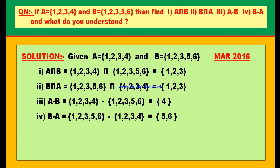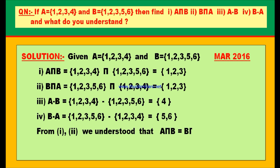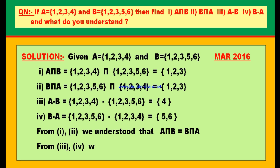From the first and second bits, both answers are equal: A intersection B = {1, 2, 3} and B intersection A = {1, 2, 3}. Therefore, A intersection B = B intersection A. From the third and fourth bits, A minus B = {4} and B minus A = {5, 6}, so A minus B is not equal to B minus A because the elements are different.